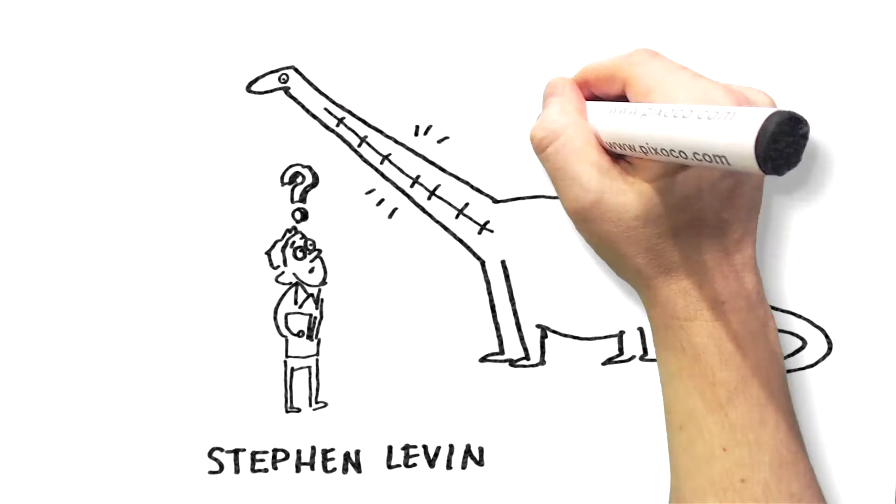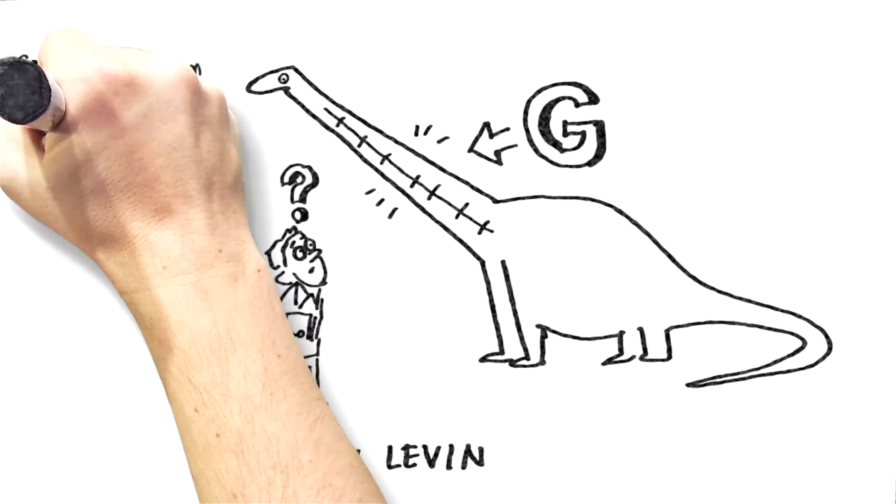In a body where muscles and skeleton work like levers, a throat of such length should never cope with the enormous force of gravity. The dinosaur would fall apart.